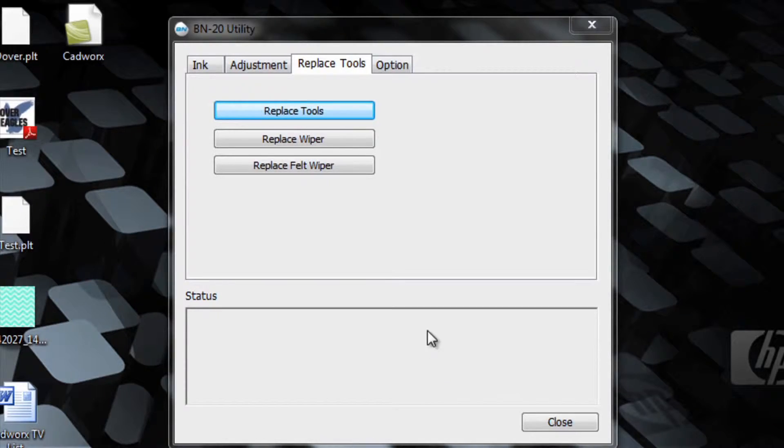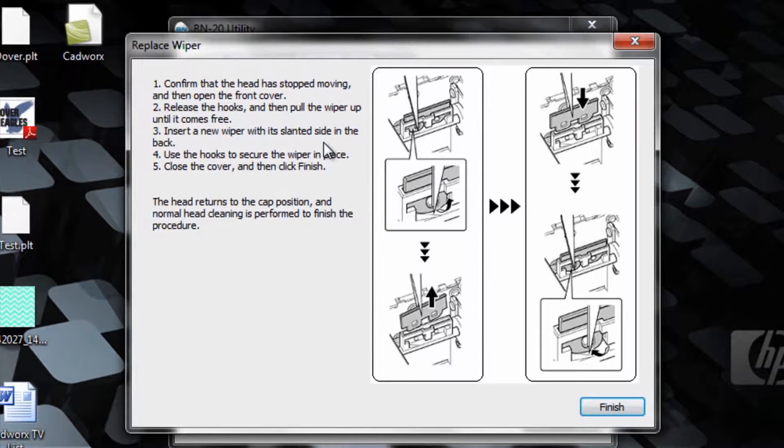In the BN20 utility in Windows, you'll go to the replace tools tab. In here, press the replace wiper button. The BN20 will move the head out of the way and rotate the wiper so you can access it.